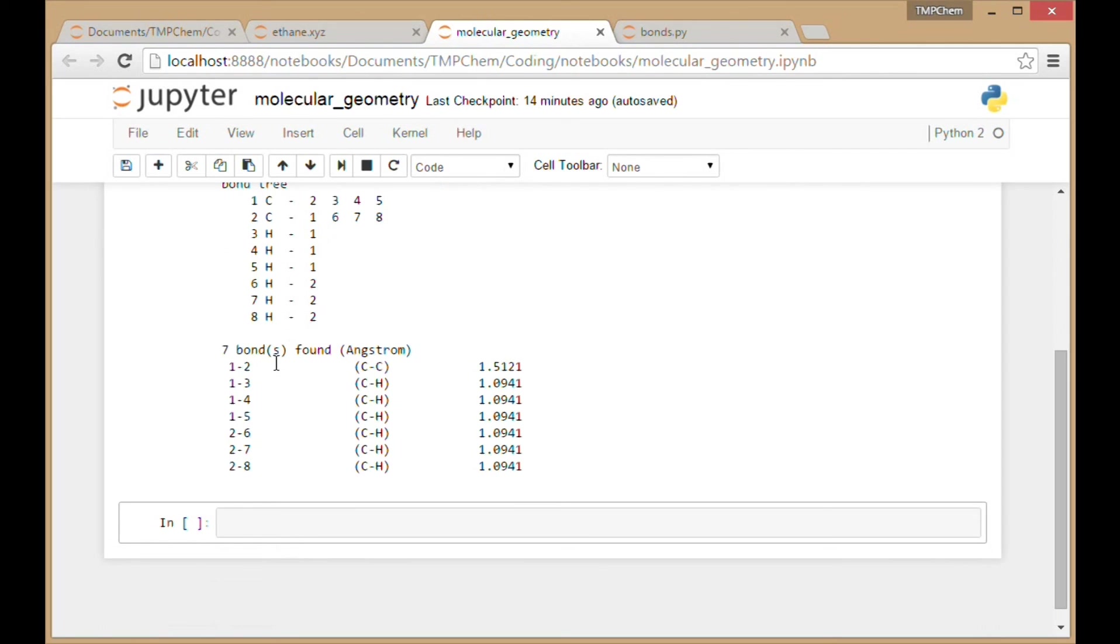It found seven bonds, the carbon-carbon bond at 1.5121 angstroms, and all the carbon-hydrogen bonds are equal length at 1.094 angstroms.